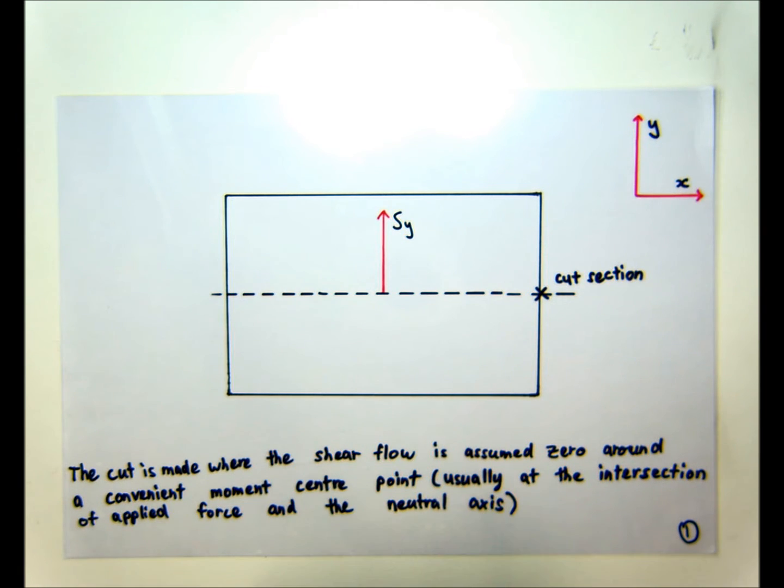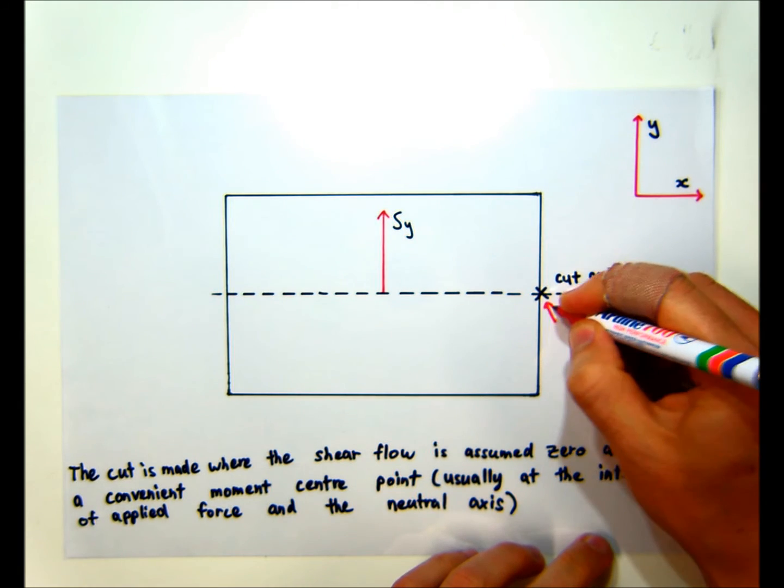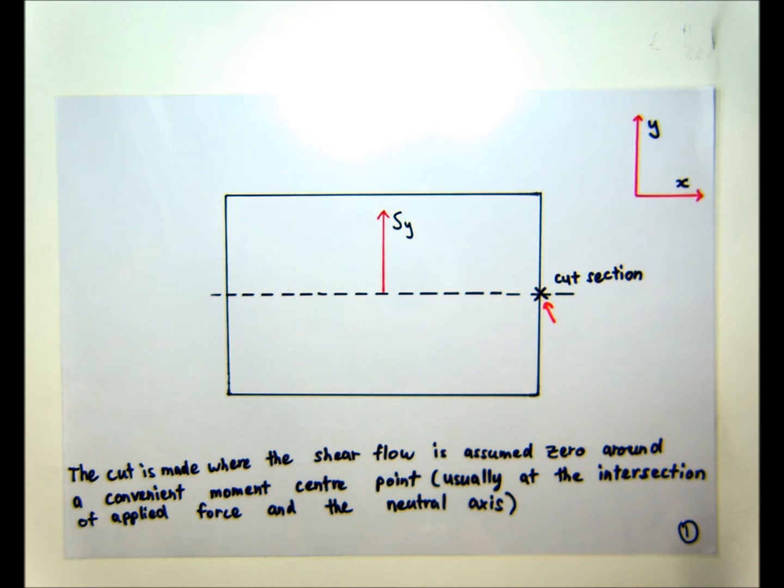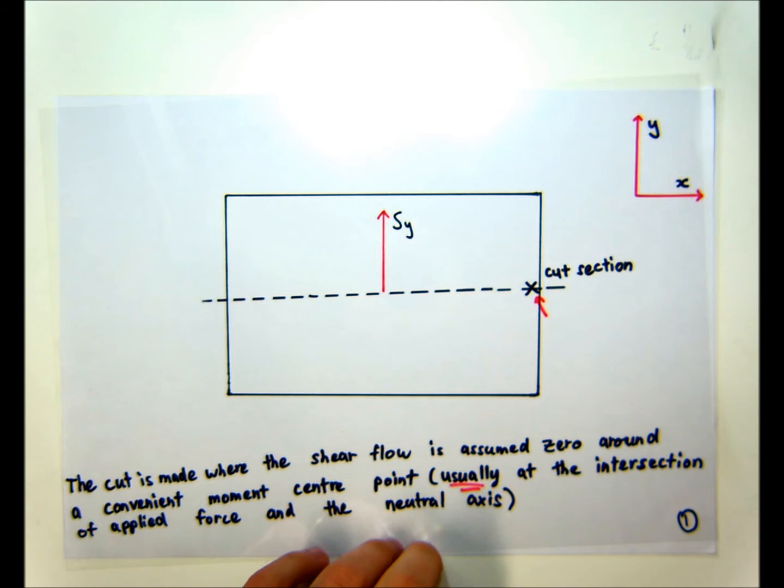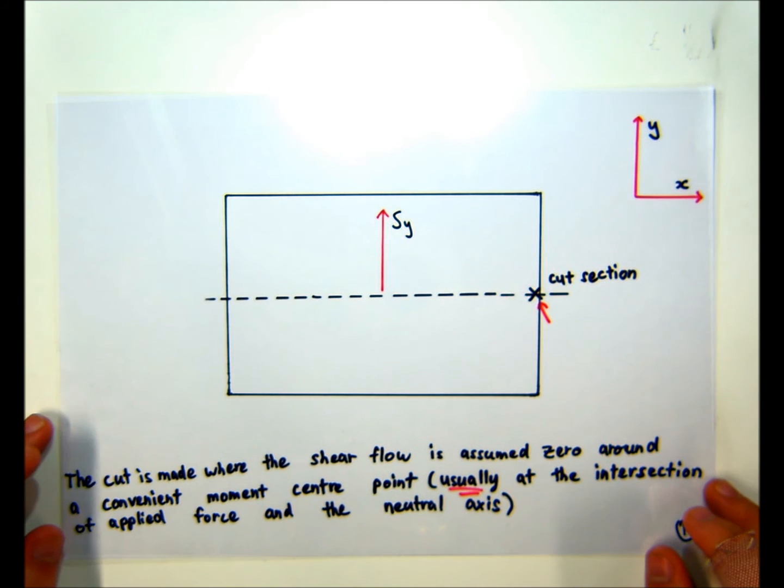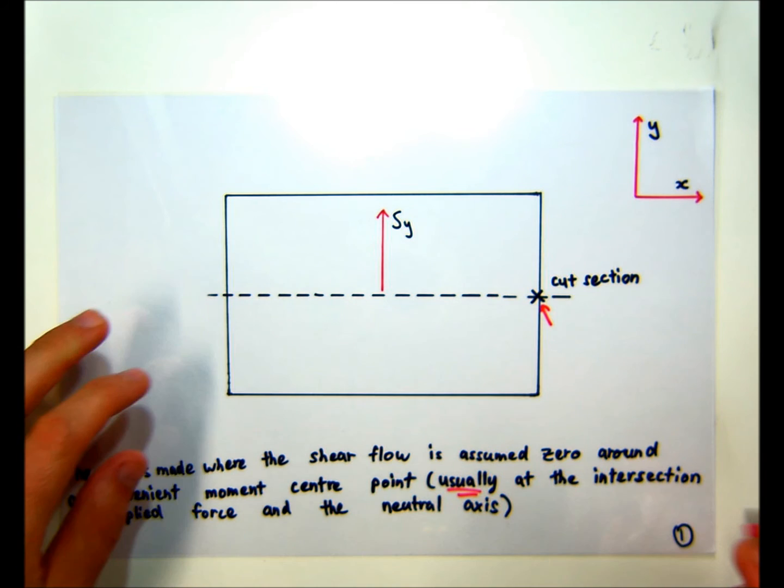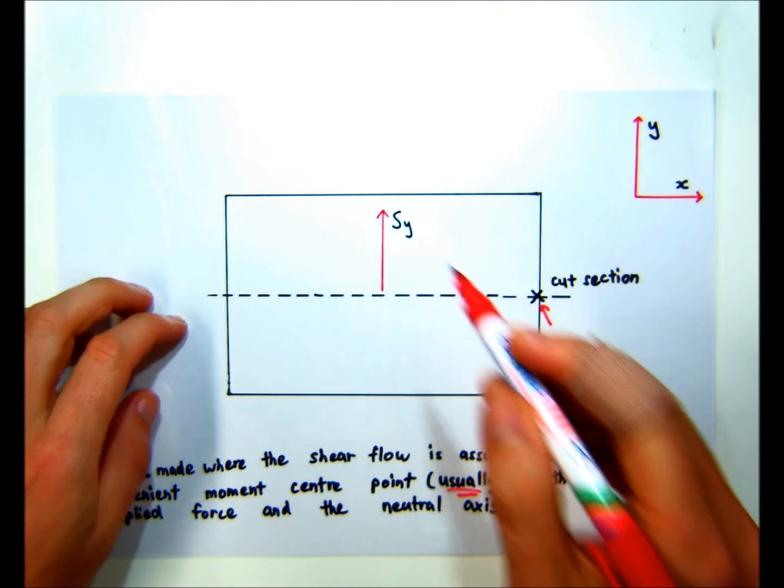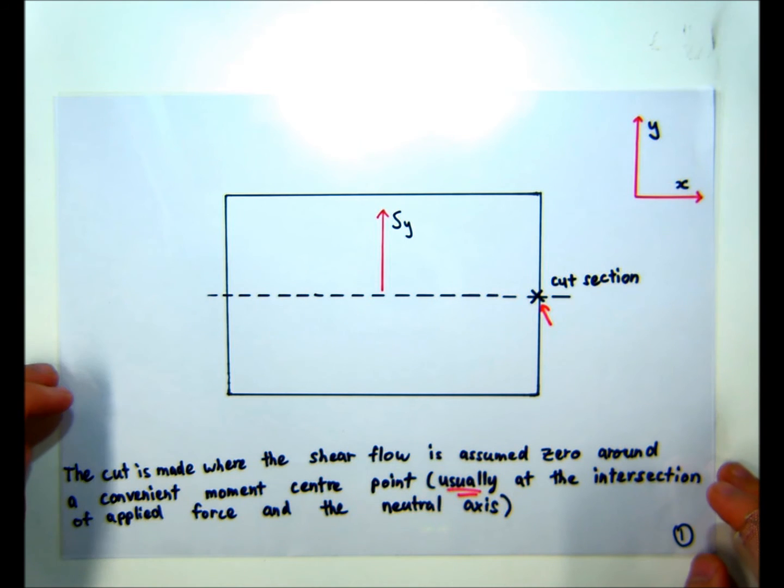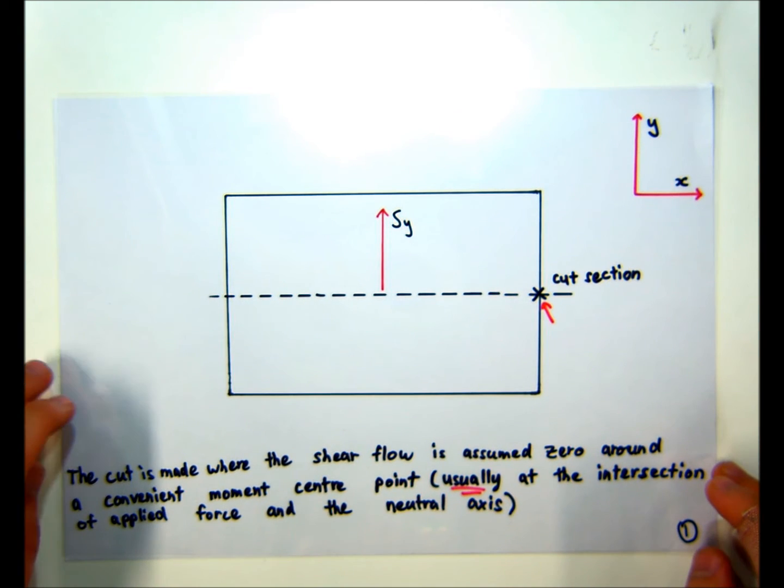So in this case, we're going to make a cut here. Usually it says down here, usually the cut will be at the intersection of the applied force and the neutral axis or the applied force and the section. So we would usually take the cut somewhere up here. But today I'll show you a general case. So say we cut there.